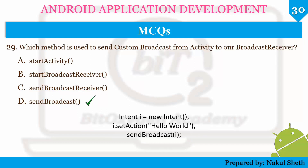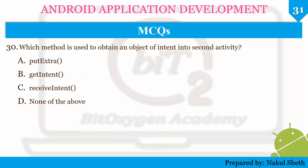To send a broadcast using sendBroadcast, first create an object of the Intent class, then call the setAction method to send a broadcast message to the Android operating system, and then use the sendBroadcast method to send this custom broadcast to the BroadcastReceiver class. The last question: which method is used to obtain an object of Intent in the second activity? The options are putExtra, getIntent, receiveIntent, or none of the above. The correct answer is getIntent.